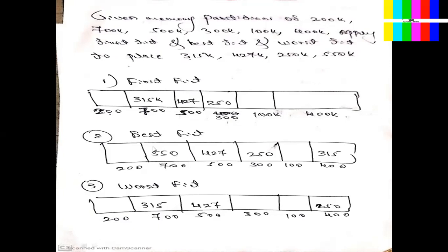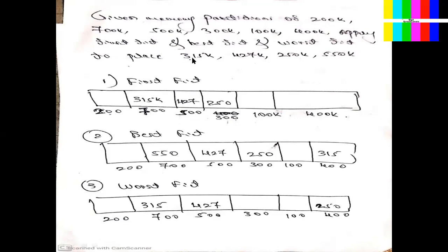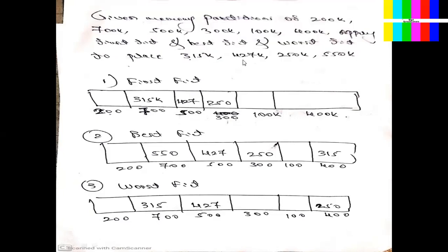Worst Fit: for the first request, search the largest block. For 315K — largest block is 700K, allocate there. For 427K — next largest available is 500K, allocate there. For 250K — next largest is 400K, allocate there. For 550K — is there any block to satisfy 550? No. So 550 cannot be satisfied using Worst Fit. Only Best Fit is able to satisfy all requests; both First Fit and Worst Fit fail to satisfy the 550K request.